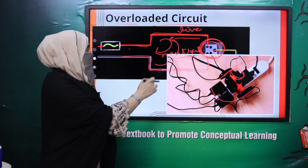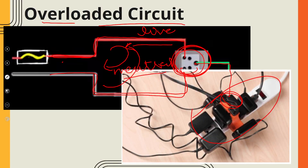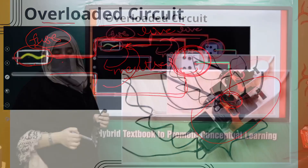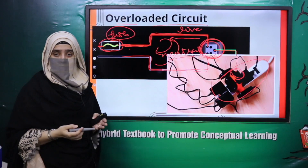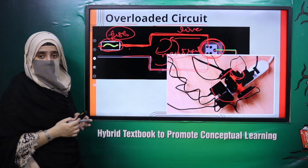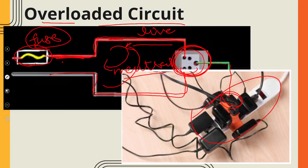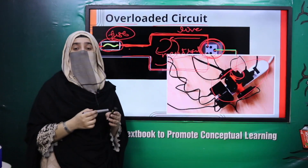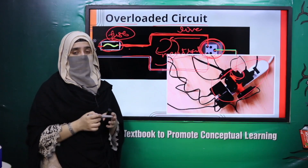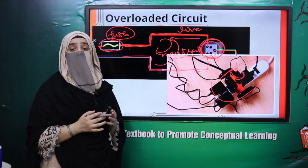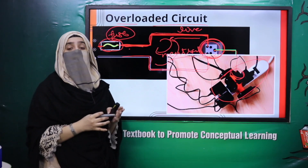When the circuit is overloaded and wires start to heat up, we use a fuse. When the fuse is damaged, it blows out and fires. Then the insulation of the wire heats up and starts to burn, and the wire starts to burn. So the overloaded circuit causes this hazard. When the circuit is overloaded and wires start to heat up, the fuse breaks down, or the circuit breaker trips, preventing further damage.